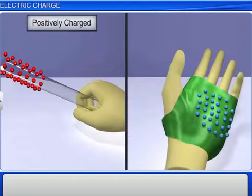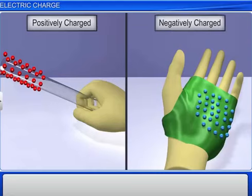In this case, the glass rod lost electrons and became positively charged, and silk gained those electrons and became negatively charged.